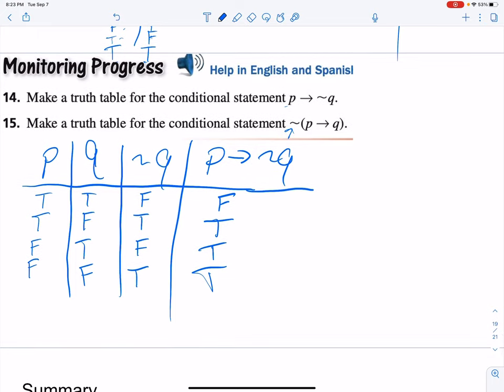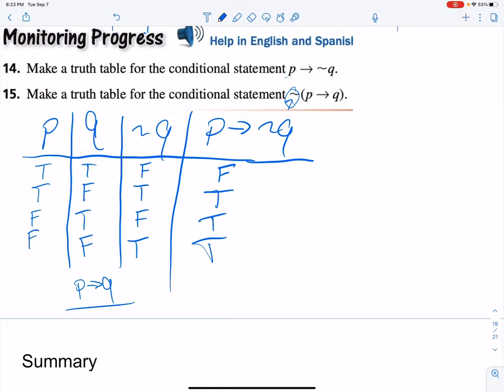Okay, now, the original conditional statement that we've done a bunch of times already, and I can do it down here too. P implies Q, we knew was true. So it's true implies true is true. True implies false is false. And then true, true.